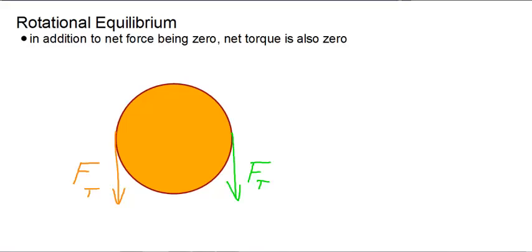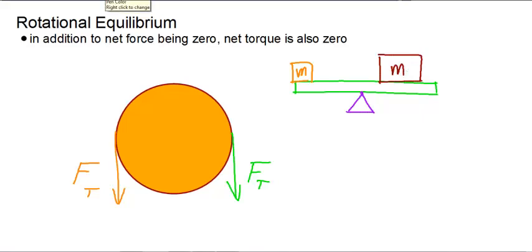If we had a seesaw with a fulcrum there in the middle, and we wanted this to be at rest, let's say we had a mass here and another mass here that's closer. The bigger mass would have to be closer to the fulcrum because the distance of the bigger mass from the axis of rotation is smaller.